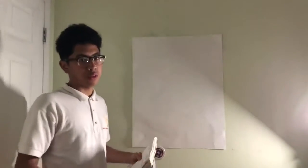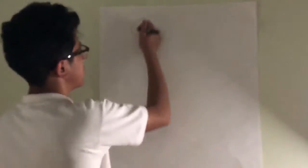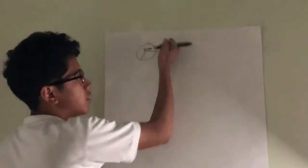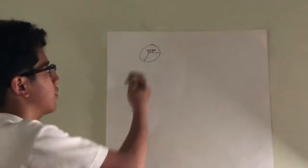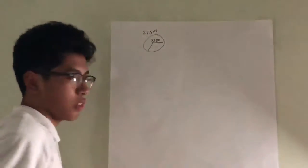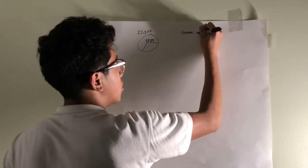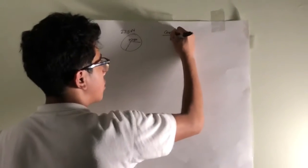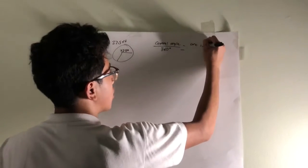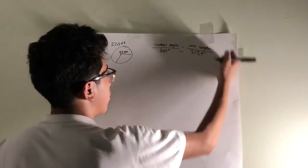Okay, so the next problem will be similar to the previous one. Where we have a circle, and the central angle will be 225 degrees. And the arc length would be 27.5 feet. So using the same formula as before, central angle over 360 degrees equals arc length over 2 pi r.